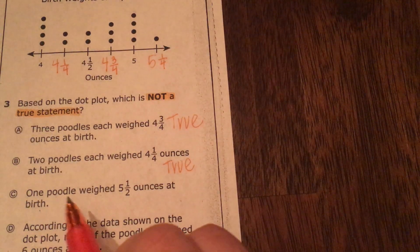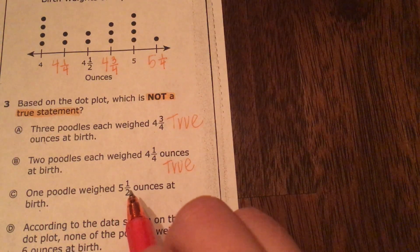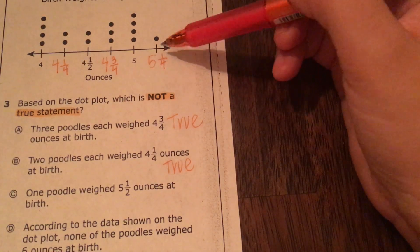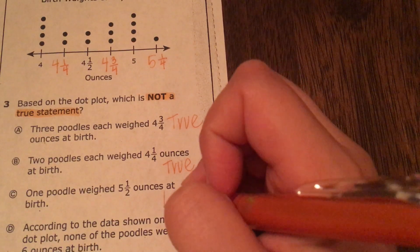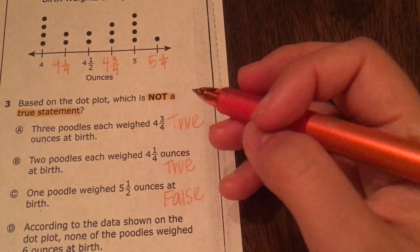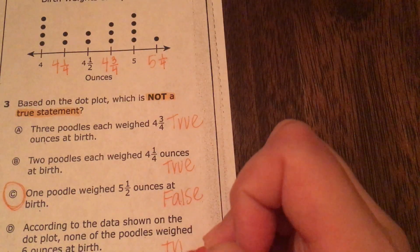Then it says one poodle weighed five and a half. Well, we don't even have five and a half. We have five and one-fourth. So that's false. That's my answer. Because this one has to be true.